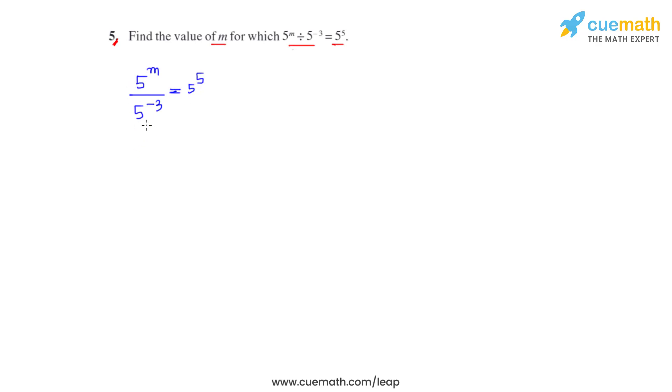As the bases on the LHS are same and they are in division, the powers get subtracted, so we write it as m minus negative 3 to be equal to 5 raised to 5.